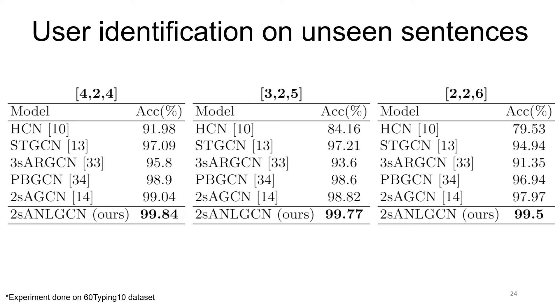In the first experiment, we split 60Typing10 by sentence type, where, for example, according to the left table, four sentences were given to train, two for validation, and four for testing.